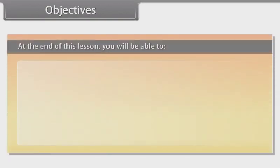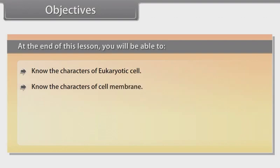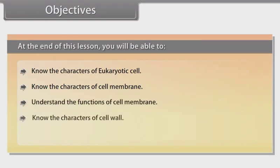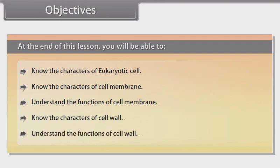Objectives: At the end of this lesson, you will be able to know the characters of eukaryotic cell, know the characters of cell membrane, understand the functions of cell membrane, know the characters of cell wall, and understand the functions of cell wall.